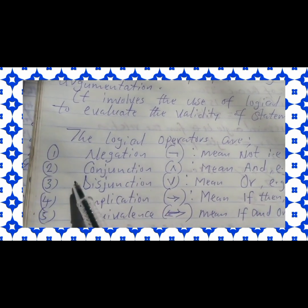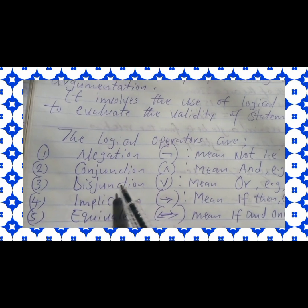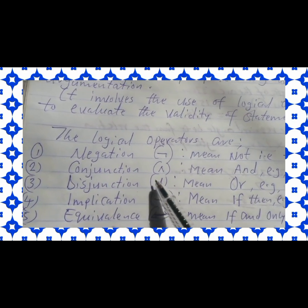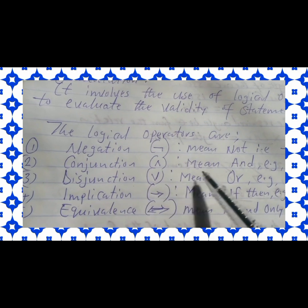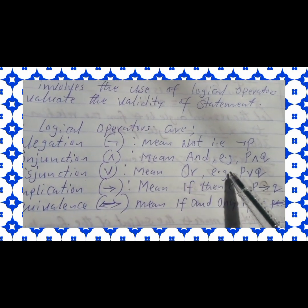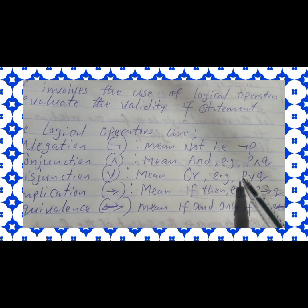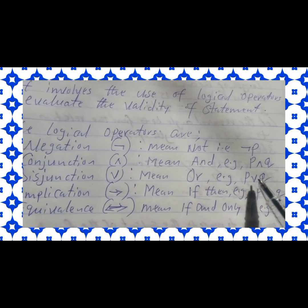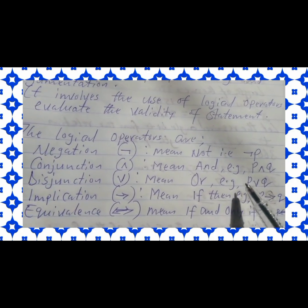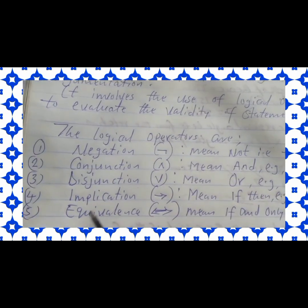Number three of the logical operators is disjunction. What is disjunction? Disjunction simply means 'or,' and this is the symbol of disjunction. For example, you are considering p or q. This symbol means 'or' and it's called disjunction in logic. Take note of it.